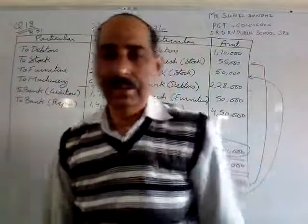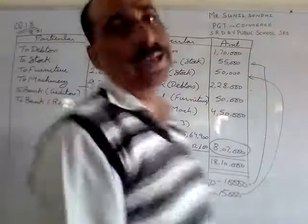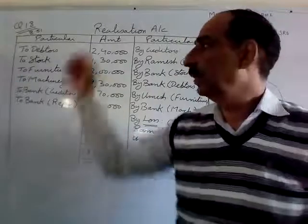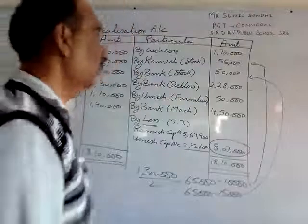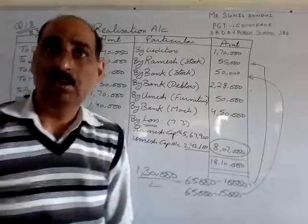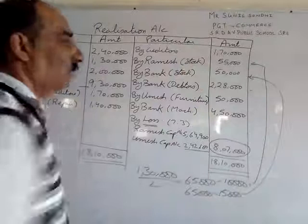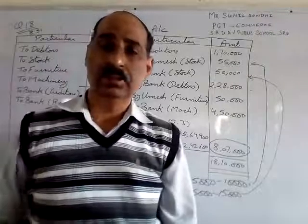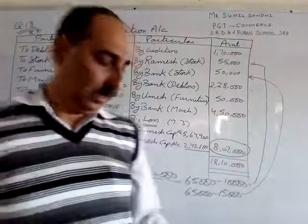Current account ko hum yahan show nahi karte. Dhyan rakhna hai ki question mein balance sheet mein se cash, bank, capital account, ya current account — kisi bhi partner ka — usko realization account mein transfer nahi karna hai. Liability side mein creditors 1,70,000 rupees hain — by creditors 1,70,000. Sirf outsider liabilities ko hi transfer karna hai. Workman compensation reserve aur reserve capital account mein distribute hota hai.